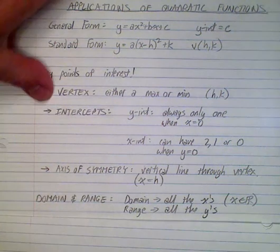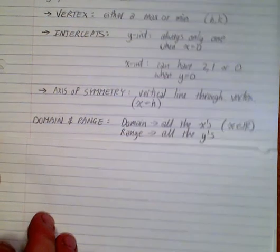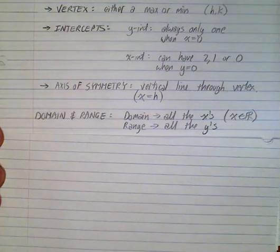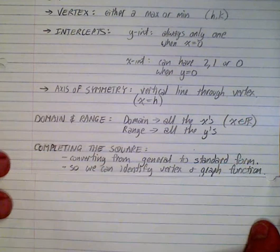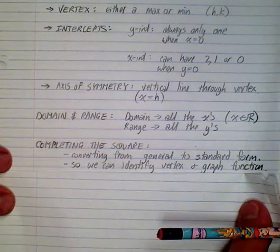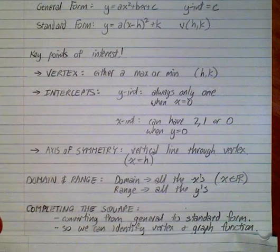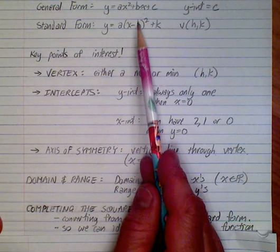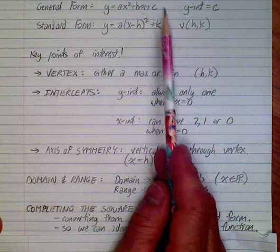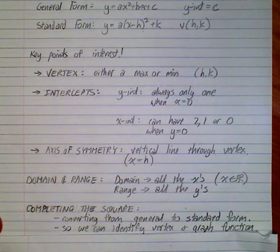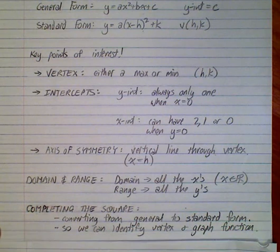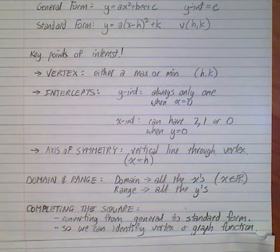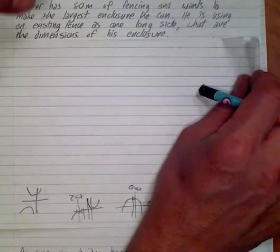Domain and range refer to what all your x values and y values can be. For the majority of these, x would be all real numbers. In real-life situations in the first quadrant, both numbers have to be positive. Completing the square is a big part of this — it gets us from the general form to the standard form so we can find the vertex, the y-intercept, the shape, and graph it. When solving word problems, we're usually looking for the vertex, the x-intercept, or the y-intercept.